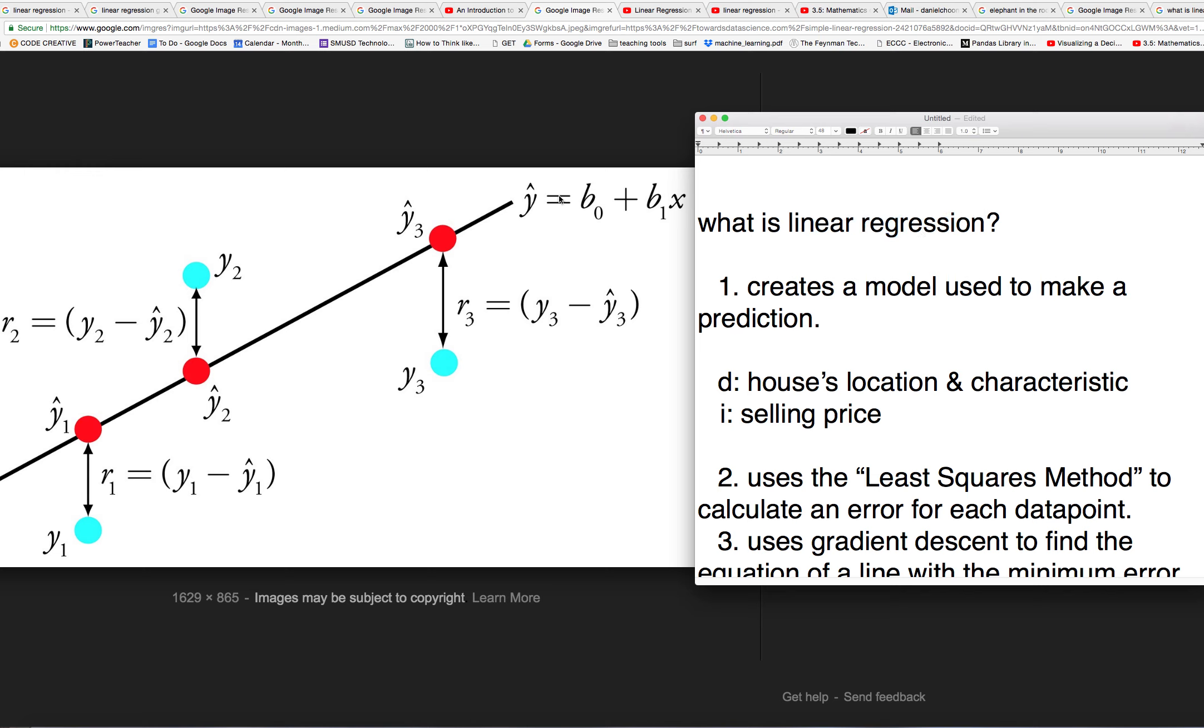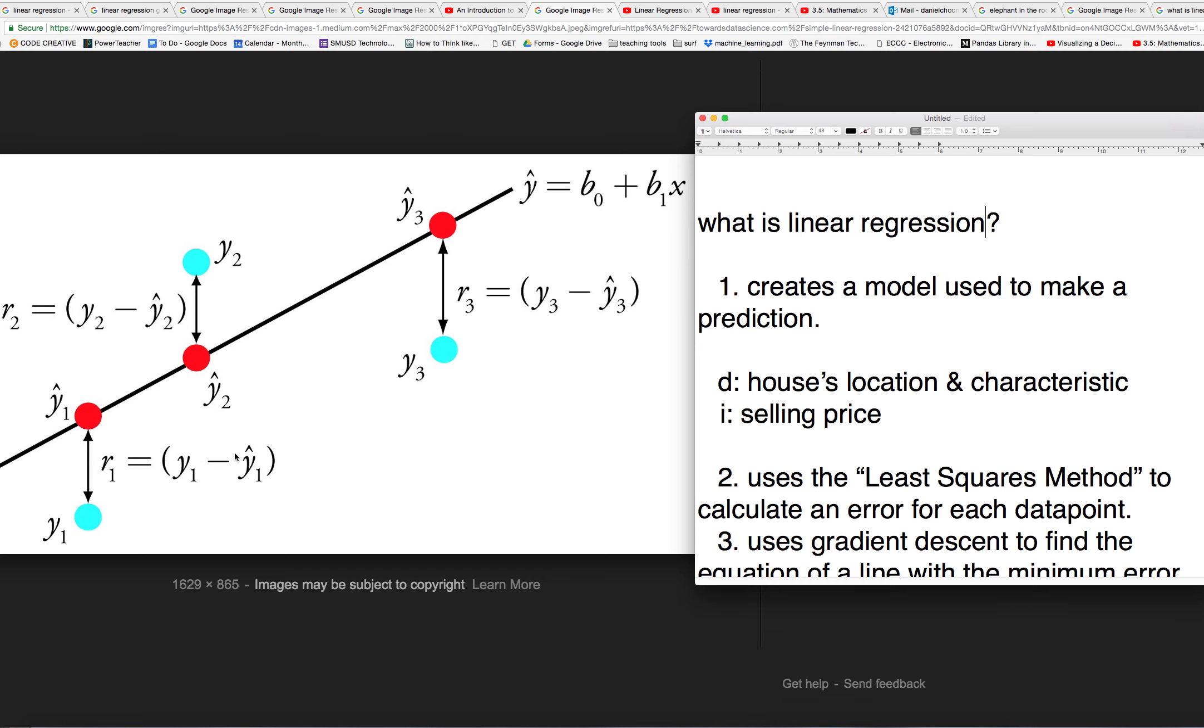It's creating this line using a set of data points. And here we just show three, but in order to create a good model, you would need as many data points as possible. And what linear regression does is it creates the model, which is this line right here that minimizes the amount of error for each data point, or amongst all the data points taken as a whole. And so then that allows you to make predictions based on new values for the dependent variable. It gives you an accurate prediction for the independent variable.